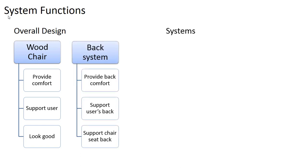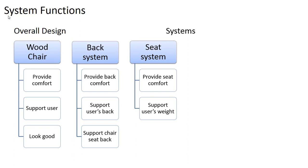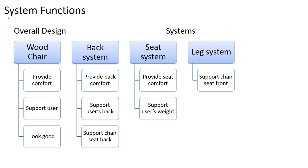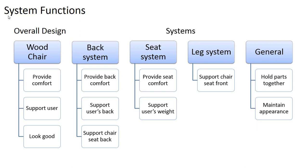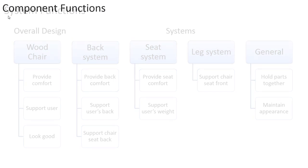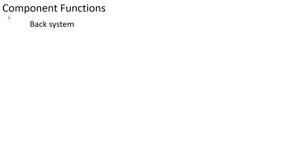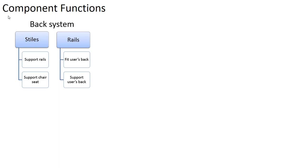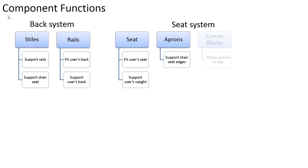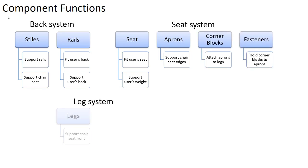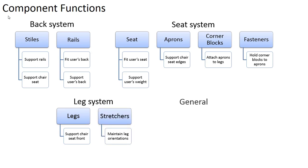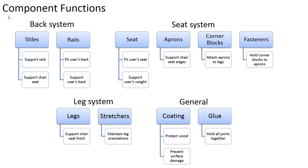Looking at the systems: the back system needs to provide comfort to the user's back, support the user's back when they lean against it, and support the chair seat back — since the full style goes all the way down to the floor as a back leg. The seat system has to provide seat comfort and support the user's weight. The leg system needs to support the front edge of the chair seat. The general system for glue and coatings has to hold parts together and maintain appearance over time. At the component level, styles, rails, seat, aprons, corner blocks, fasteners, legs, stretchers, coating, and glue all have defined functions.